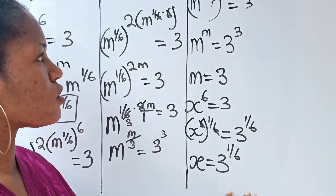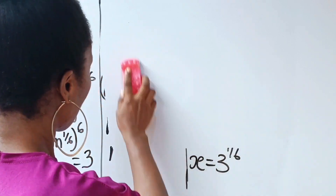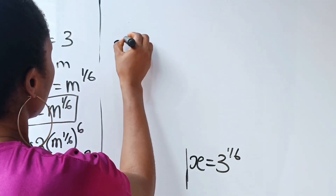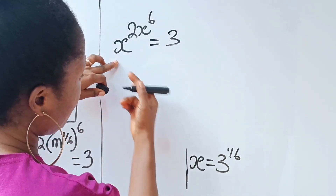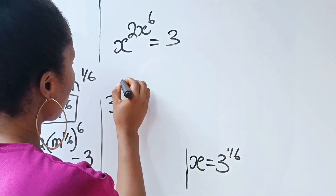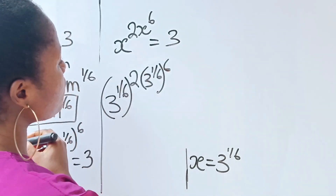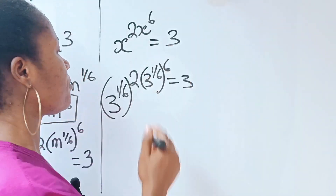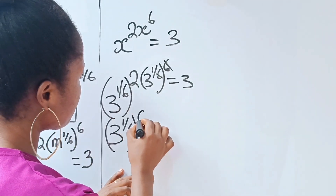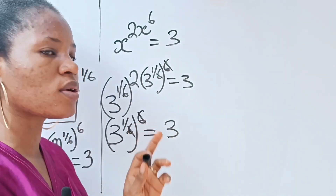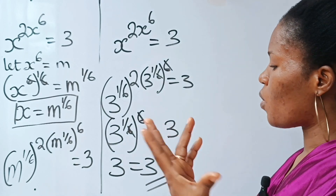Now let's prove that x equals three to the power of one over six. The equation says x to the power of two x to the power of six equals three. Replacing x with three to the power of one over six, we get three to the power of one over six raised to the power of two, times three to the power of one over six raised to the power of six, equals three. Using the law of indices, one over six times six gives one, so we have three to the power of two times three equals three to the power of one, which gives three equals three. The left hand side equals the right hand side — proved.